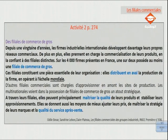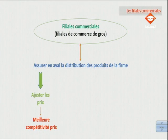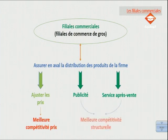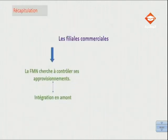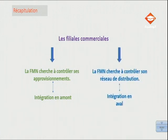Les mobiles ici, c'est un peu comme une intégration verticale, mais non plus en amont, mais en aval. La firme multinationale, en implantant ses filiales de commerce de gros, cherche à ajuster ses prix pour améliorer sa compétitivité-prix, mais surtout à mieux promouvoir ses produits et à assurer un service après-vente de qualité pour obtenir une meilleure compétitivité structurelle. Pour résumer, lorsqu'on parle de filiales commerciales, soit la firme multinationale cherche à contrôler ses approvisionnements — stratégie d'approvisionnement, intégration en amont — soit elle cherche à contrôler son réseau de distribution — concentration verticale en aval, en descendant la filière.